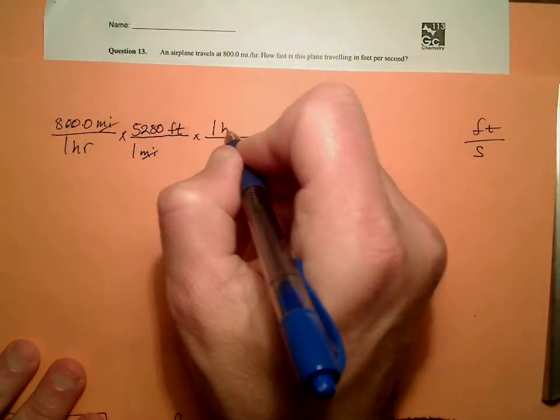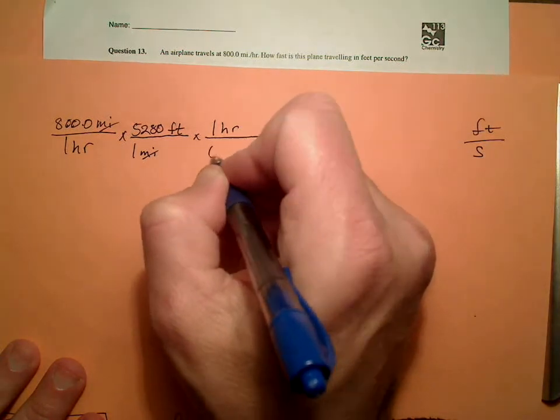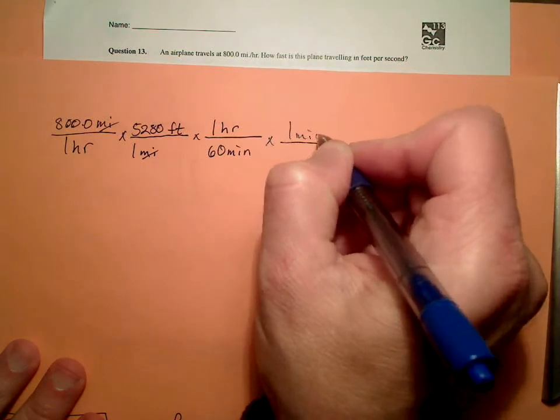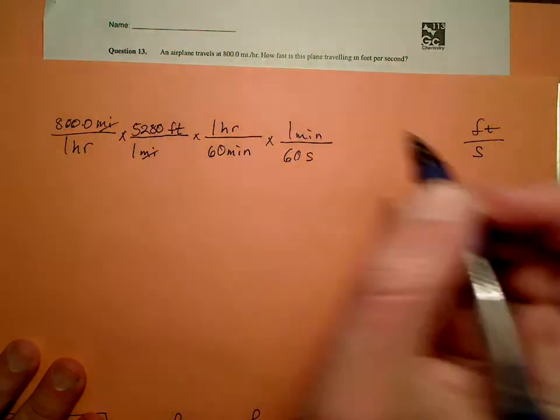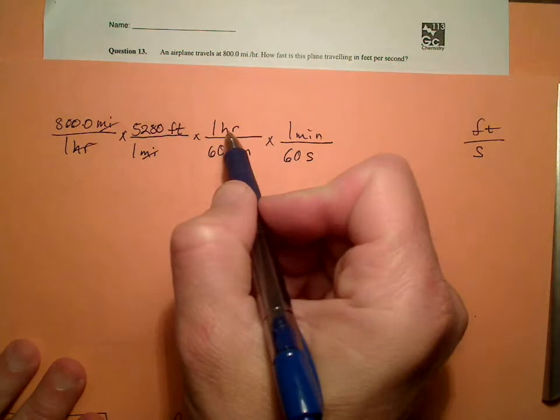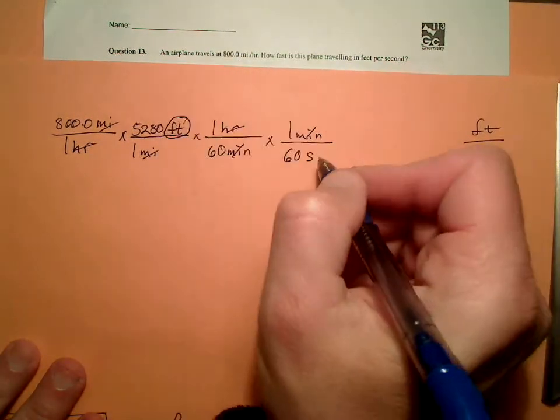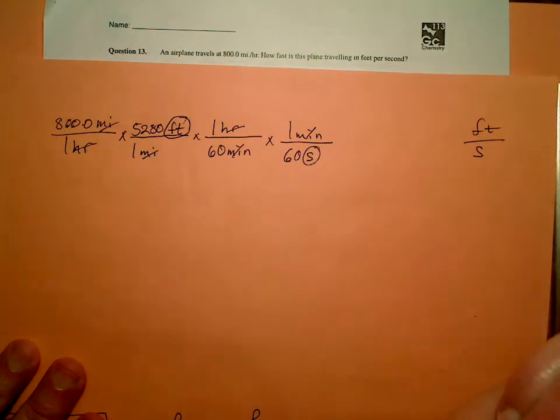I convert hours to seconds. One hour is 60 minutes. And one minute is 60 seconds. Checking. Hours cancel. Minutes cancel. We're left with feet per second. Bingo.